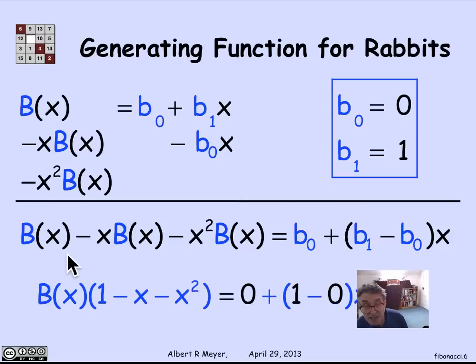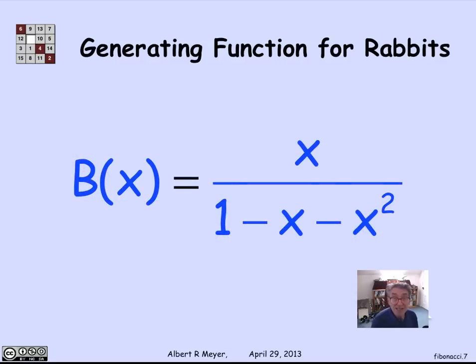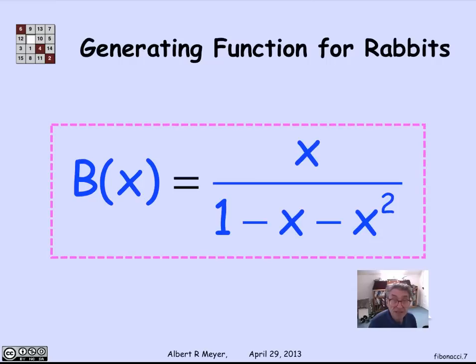And what I discover is factoring out B of x is that B of x times 1 minus x minus x squared is equal to x. There it is. That is a lovely expression for the generating function for rabbits and Fibonacci numbers. And let's remember that because we're going to make use of it in the next segment when we figure out how to extract the coefficients using partial fractions from a generating function like this one.